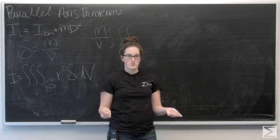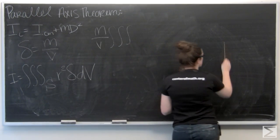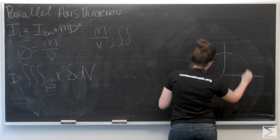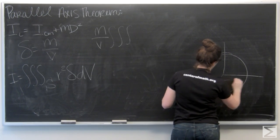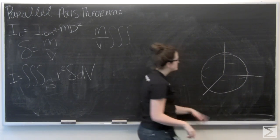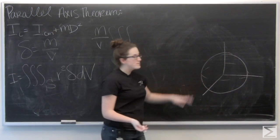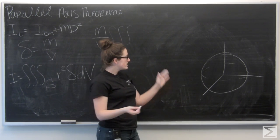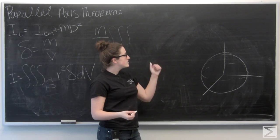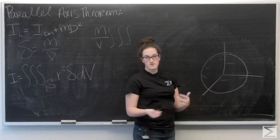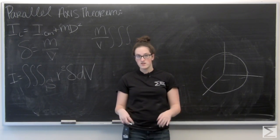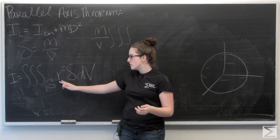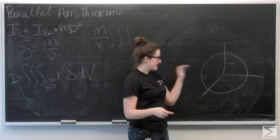Let me go ahead and draw the sphere we're working with. I'm given a little bit of freedom as far as what axis I want the ball to rotate around, so I'm going to put it through the Z axis just for simplicity. Now the r of cylindrical coordinates will match this r distance to the Z axis.